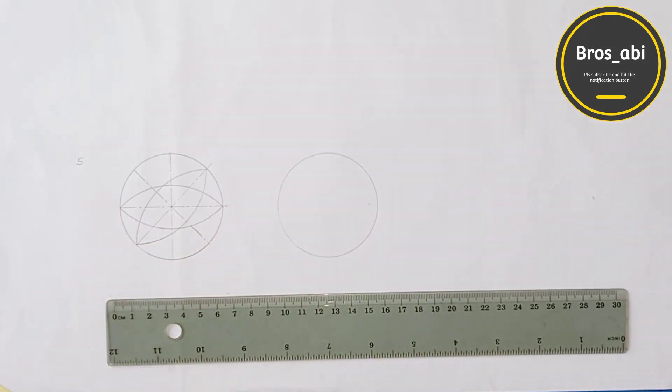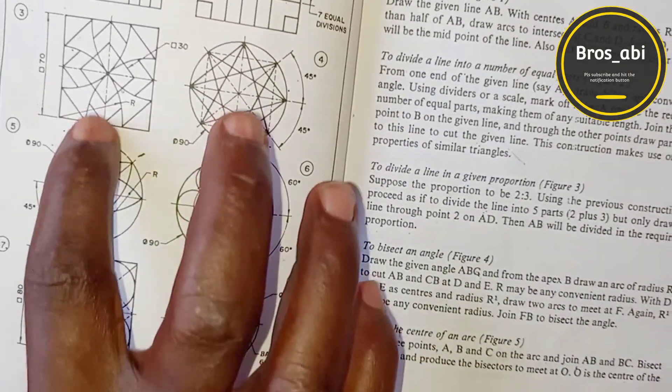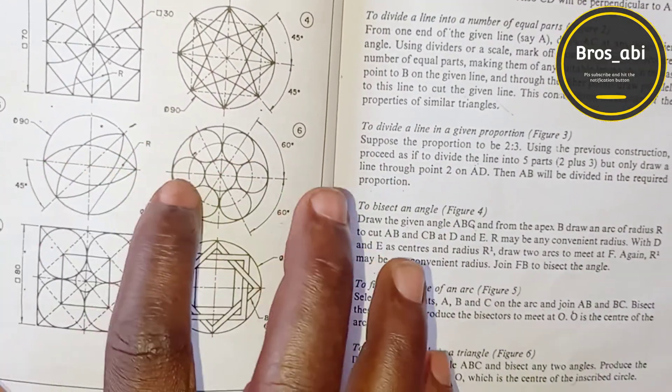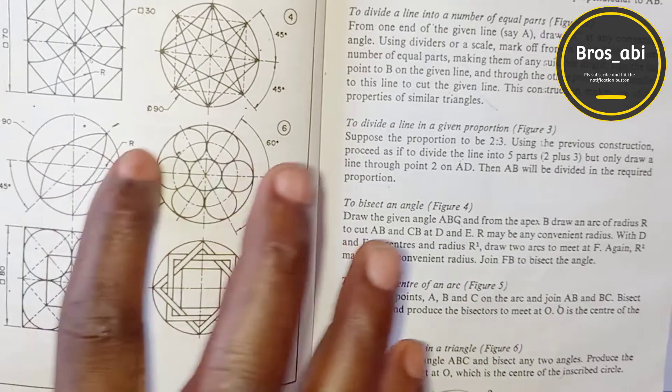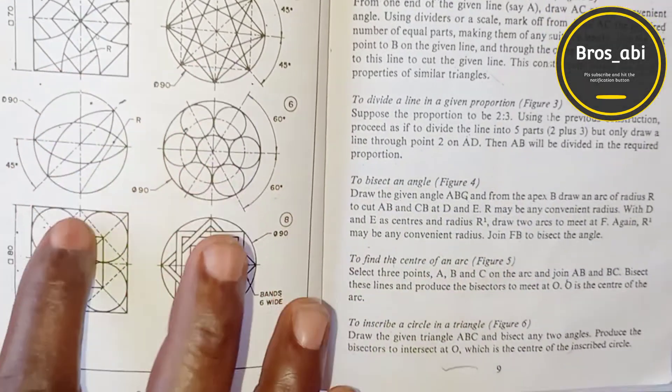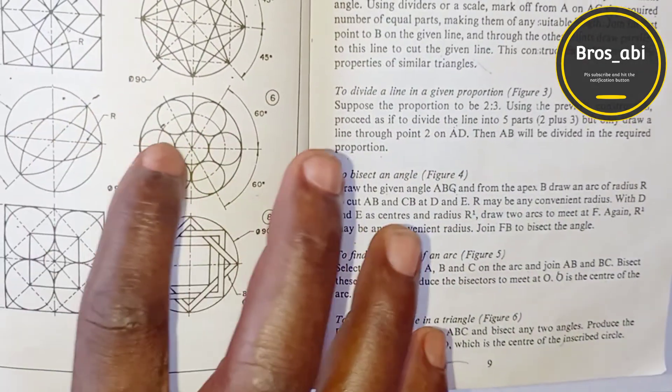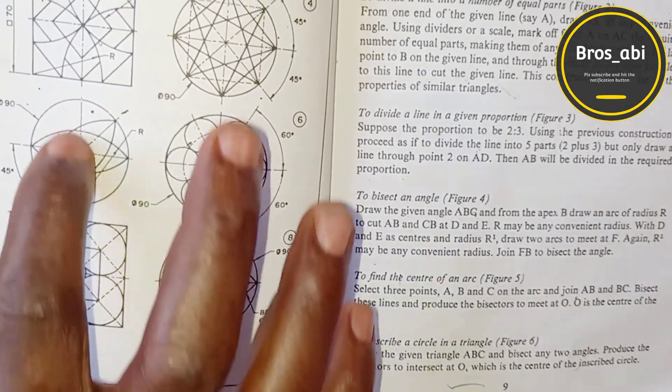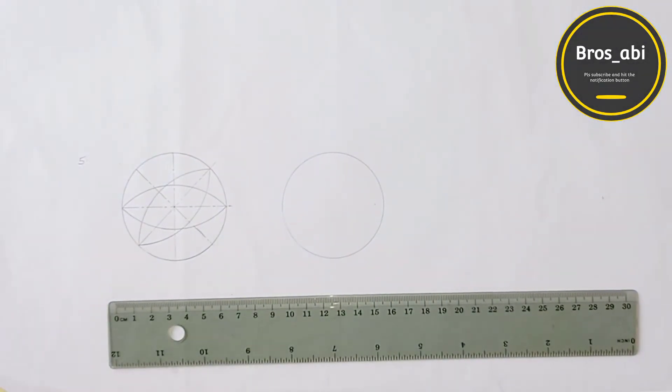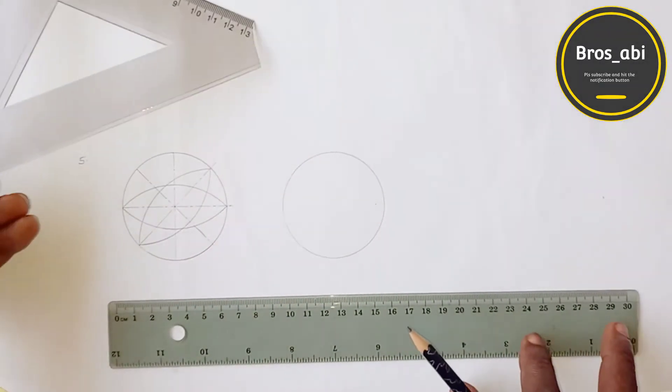Now, the next step is this. I'm going to draw my diameter and to draw the diameter, you are going to use chain line. That is to draw a line passing through the center of the circle. It's going to be a chain line you will use. So I'm doing that now.